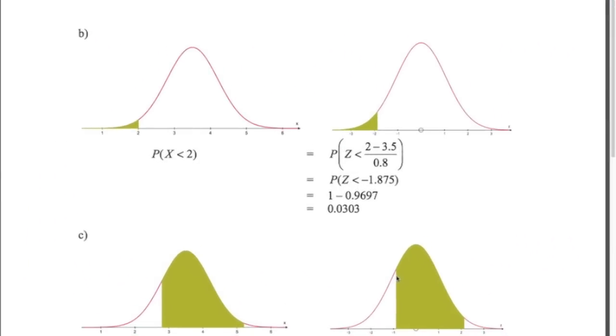Second question: what's the probability that we wait less than two minutes? Draw the diagram - there's 3.5 in the middle, less than 2. Let's change that value of 2 into a z value. So 2 minus the mean divided by the standard deviation, that z value is negative 1.875, and that makes sense. You can see it's to the left of 0, and that's to the left hand side here. So this area and this area are exactly the same thing.